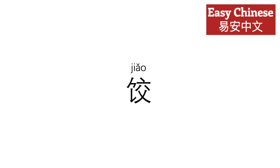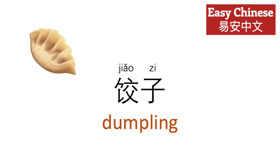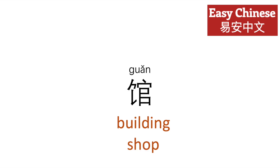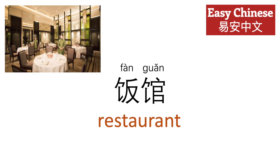The 食 radical appears in 饺 as in 饺子, dumpling. And in 馆, meaning building or shop, so we have 饭馆, restaurant.